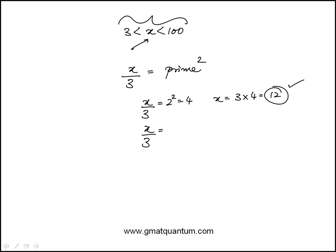The next higher prime is 3. So 3² is 9, which means x is 3 times 9, or 27. That also satisfies. I have 2 so far.